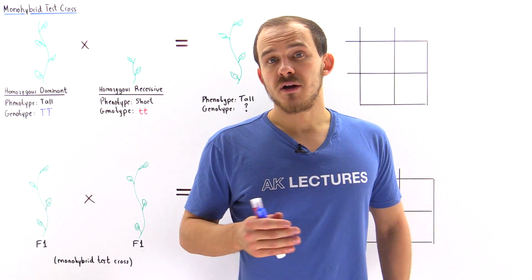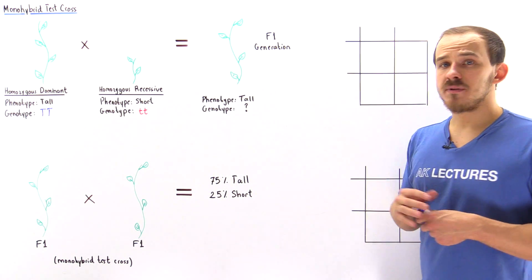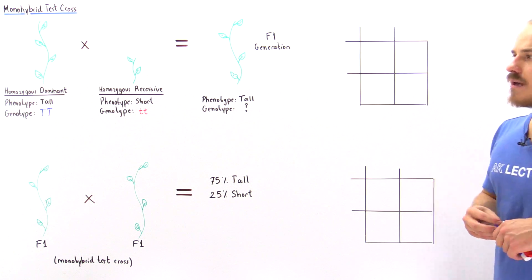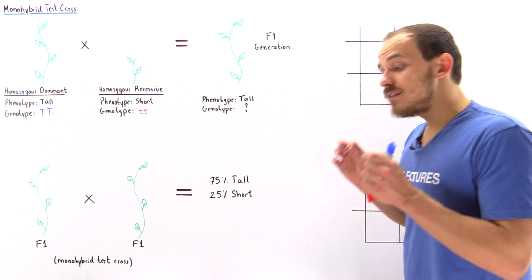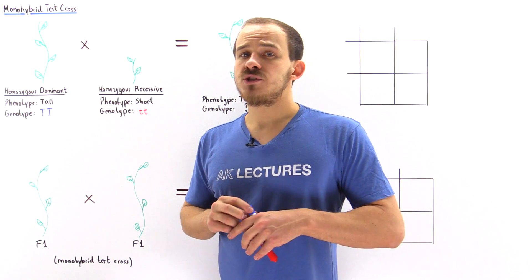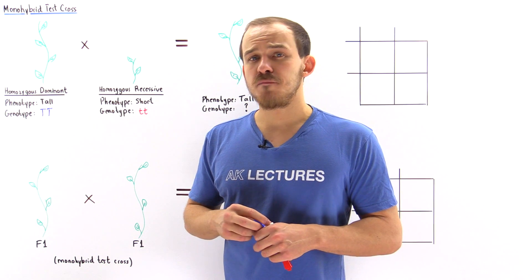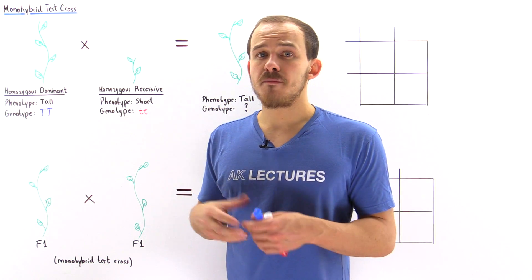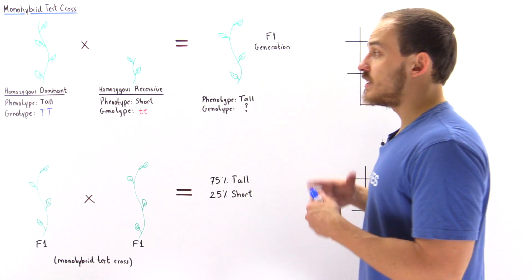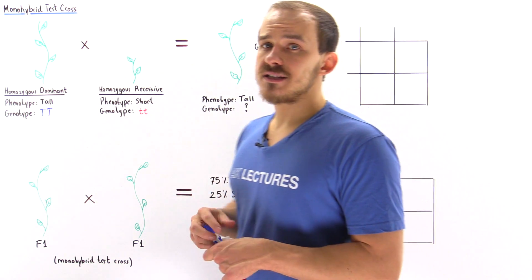Now that we know what a Punnett square is, let's take a look at how we can apply the Punnett square to help us solve different types of problems in genetics. Let's begin by discussing those same two experiments conducted by Gregor Mendel, which allowed him to discover the law of dominance and the existence of dominant traits and recessive traits.